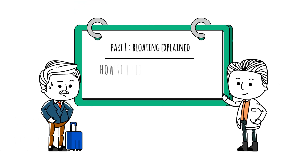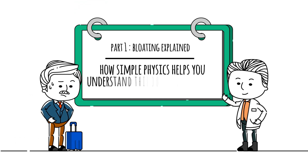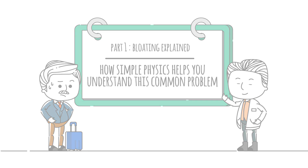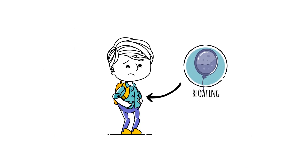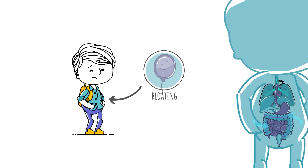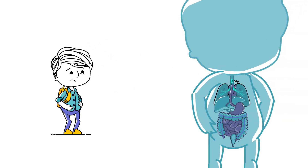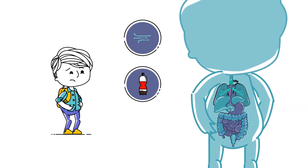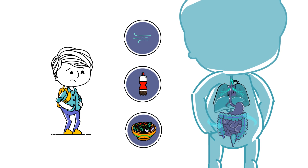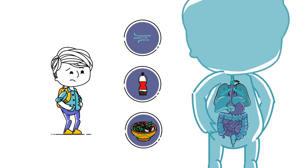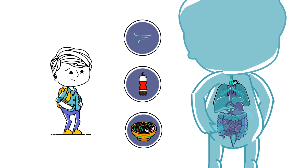Bloating Explained: how simple physics helps you understand this common problem. Bloating comes from gas trapped in your digestive system. This gas comes from many places, including the air you swallow, the carbonated beverages you drink, and the fermentation of undigested food by the microbes in your colon.